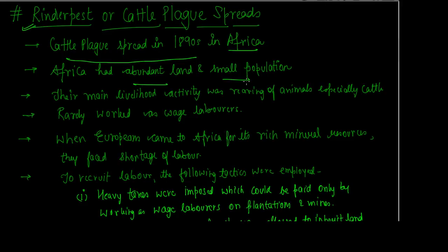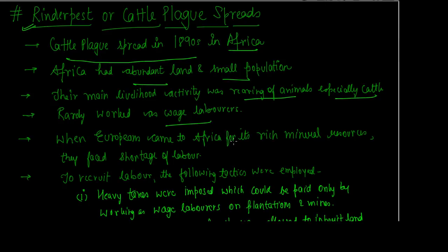Africa had a lot of mineral wealth, abundant land, and a small population. Their main livelihood activity was the rearing of animals, especially cattle, obviously for beef production. They rarely worked as wage laborers, because they had an abundant amount of land and animals. They did not feel the requirement to do wage labor.